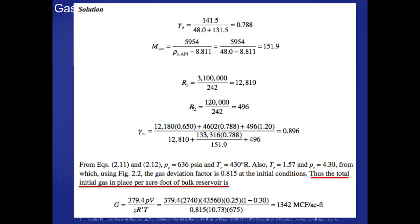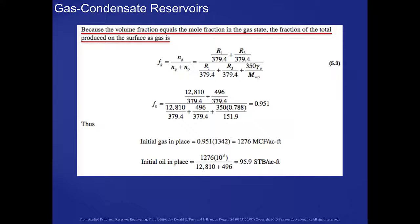We'll use the information from Chapter 2 to calculate a z-factor, and then we can use that z-factor in this equation at the bottom of this slide to calculate the total gas in place on a per acre-foot basis. Because the volume fraction equals the mole fraction in the gas state, we can calculate the fraction of the total produced gas on the surface from this expression 5.3. You can see that it turns out to be 0.951 in this example problem. Thus, the initial dry gas in place, we simply multiply 0.951 times our initial wet gas in place to give us what we could expect to have as our initial dry gas in place. We can calculate the initial oil in place from our R factors, and we calculate 95.9 stock tank barrels per acre-foot.